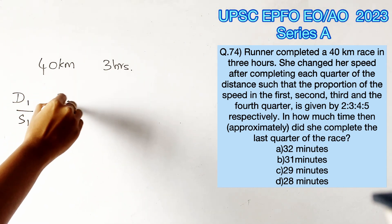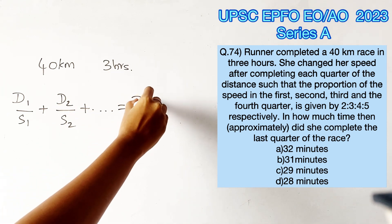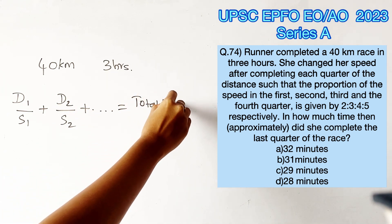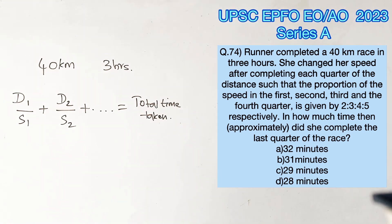We know that when different distances are covered with different speeds, the total time taken would be the sum of individual time taken for covering each distance. Since time equals distance by speed, if d1 is covered with a speed of s1, d2 is covered with the speed of s2, and so on, the total time taken would be the sum of d1 by s1 plus d2 by s2 plus d3 by s3 and so on.